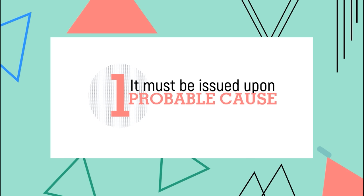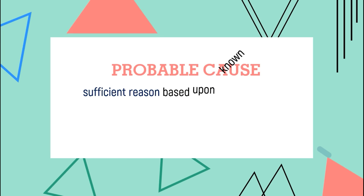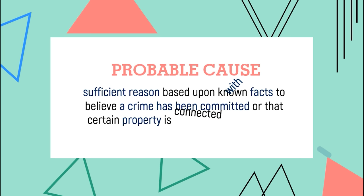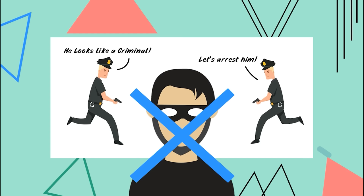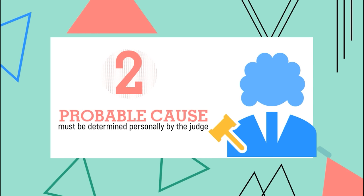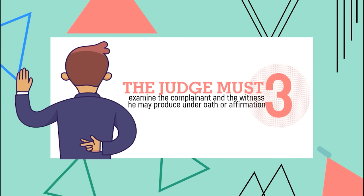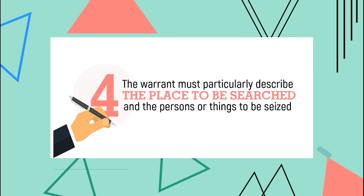A valid search warrant and warrant of arrest must contain the following. First, it must be issued upon probable cause — sufficient reason based on known facts to believe a crime has been committed or that certain property is connected with a crime. For example, police officers cannot arrest someone just because he looks like a criminal; just wearing a black shirt and black mask doesn't make someone a criminal. Second, probable cause must be determined personally by the judge. Third, the judge must examine the complainant and witnesses under oath or affirmation. Last, the warrant must particularly describe the place to be searched and the persons or things to be seized.